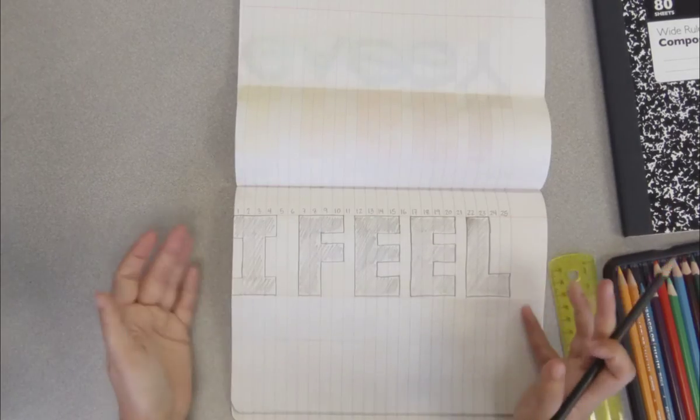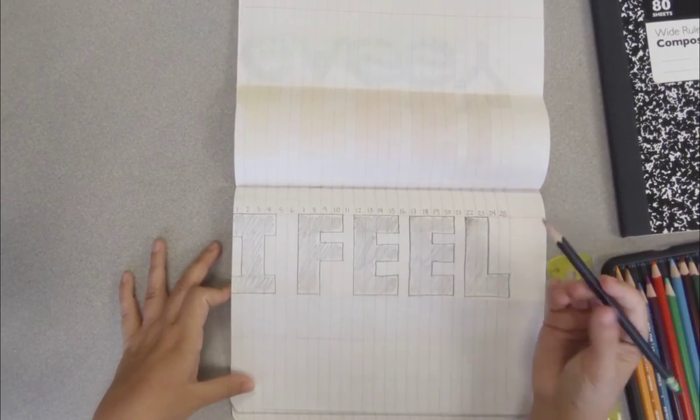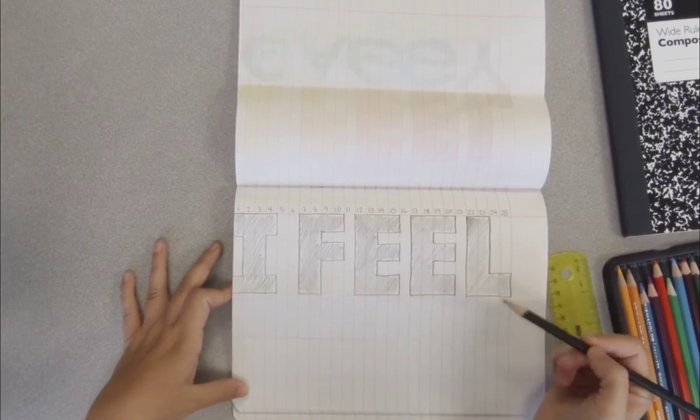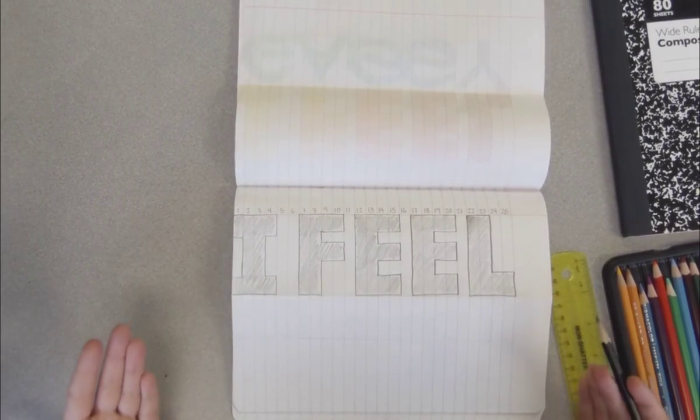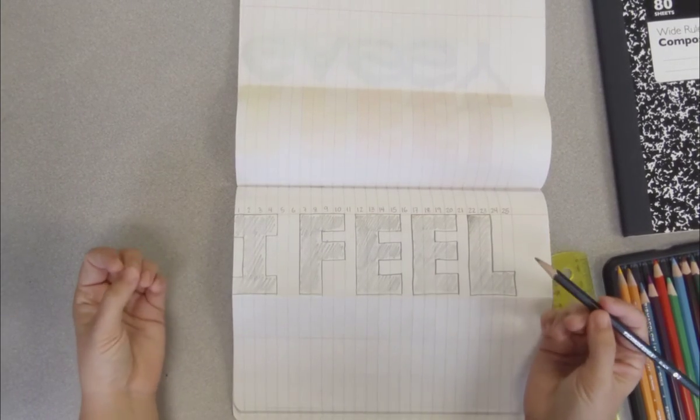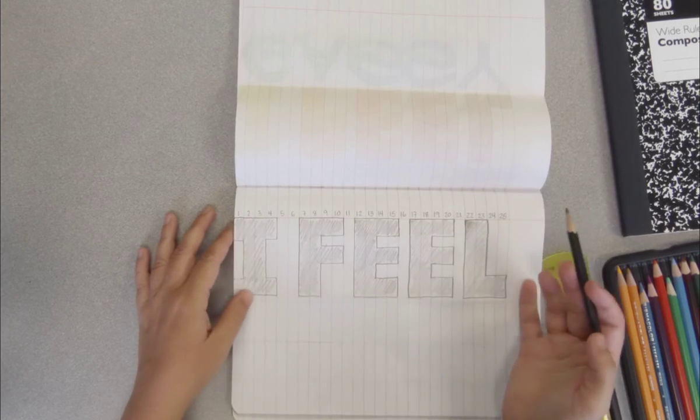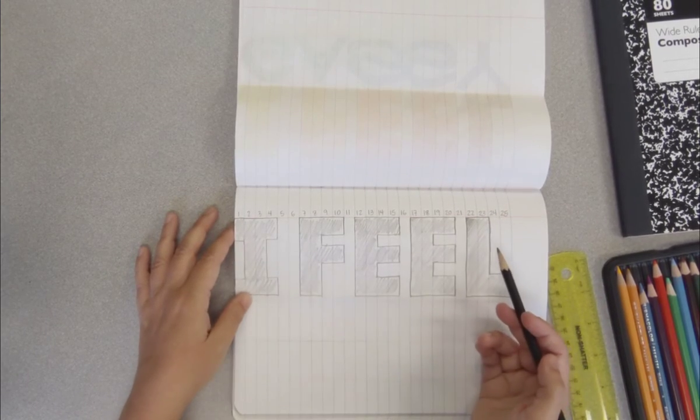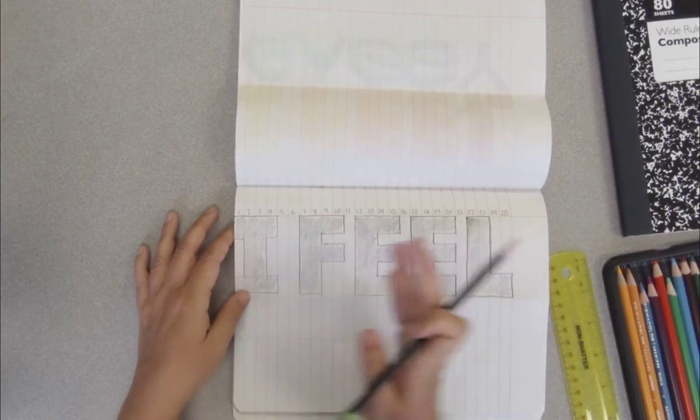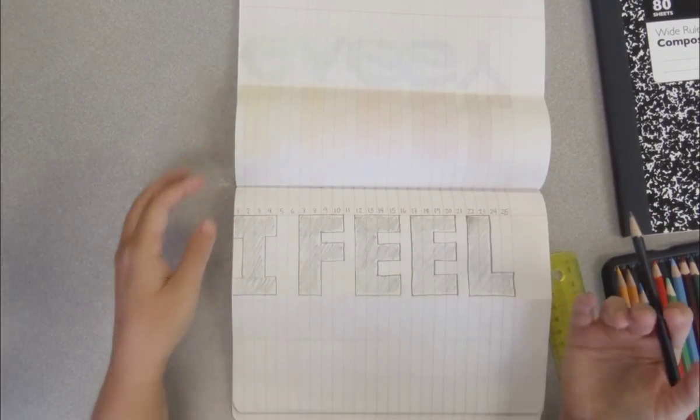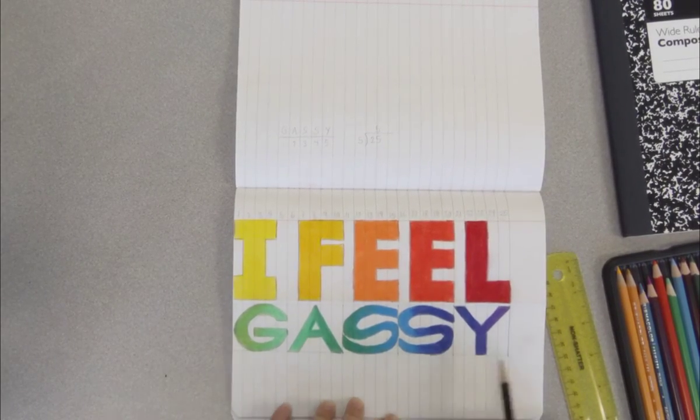And then you can decide, you know, you have 25 columns here. So for whatever word you choose to finish out this sentence, I feel blank, you can try to get evenly spaced letters by figuring out how many letters you have in your word. You have 25 columns to work with.